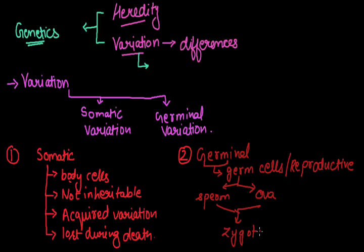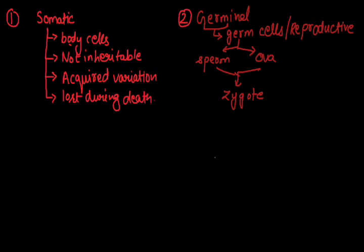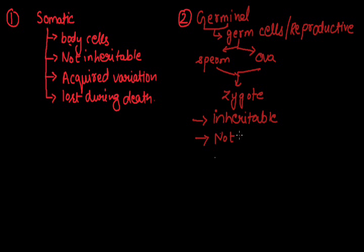Due to the fusion of these germ cells — that is, sperm and ova — a zygote is formed. So if there is any variation or problem in the chromosomal number of the sperm or ova, that brings variation or differences in the zygote itself. This is the germinal variation, which does not occur in normal body cells but in germ cells. It is inheritable — it passes from one generation to another — and these variations are not lost during the death of the individual. Another name for germinal variation is blastogenic.